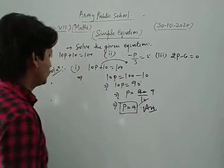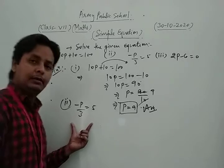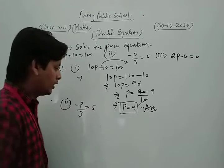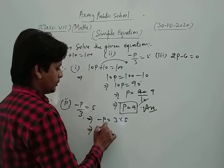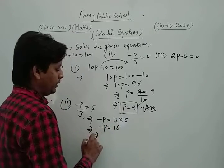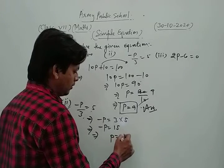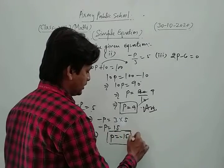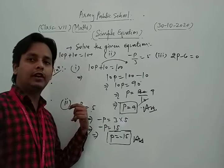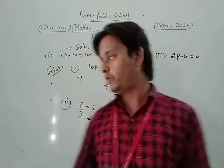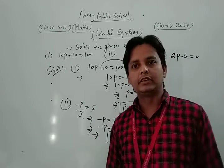Similarly, we take the second part: minus p upon 3 is equal to 5. We do cross multiplication, so minus p is equal to 3 into 5, which is 15. Then we multiply both sides by minus 1, and we get p is equal to minus 15. This is the required solution, because in that equation the variable is p and its value is minus 15.